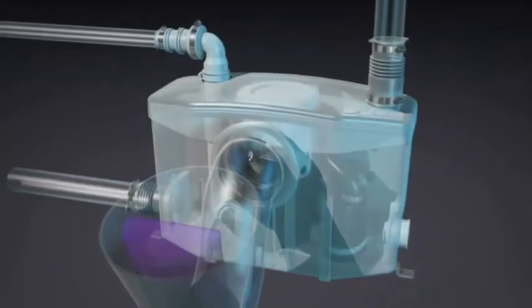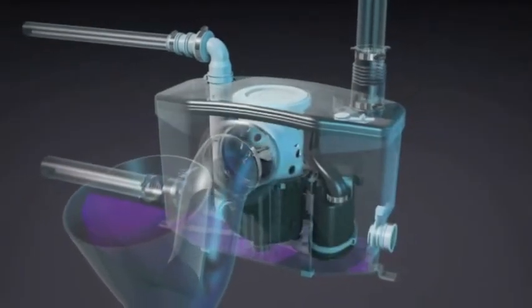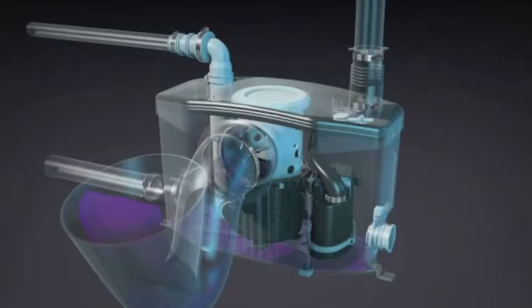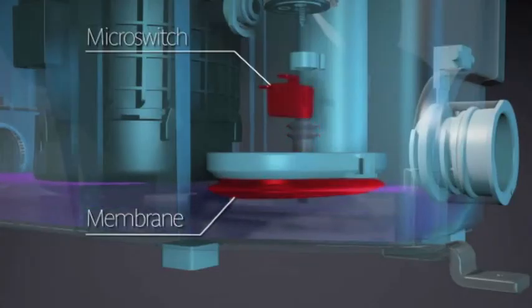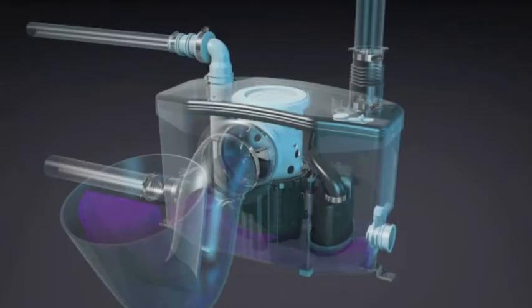When the toilet is flushed, the water drains into the pump. Inside, the pressure sensing system consisting of a microswitch and a membrane detects pressure from the water level rising inside the unit. Once the water reaches the membrane,